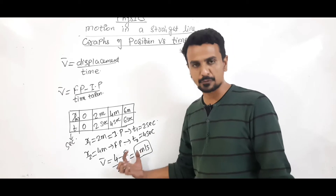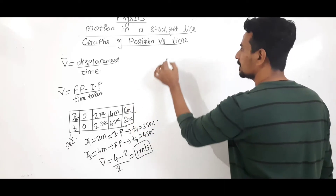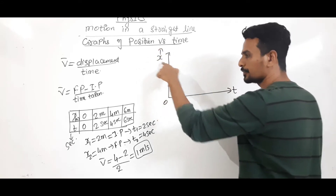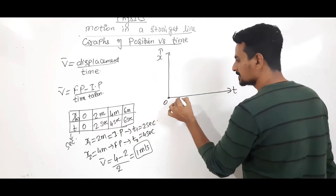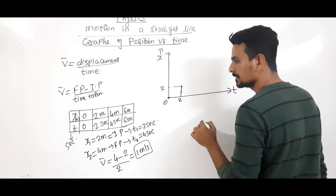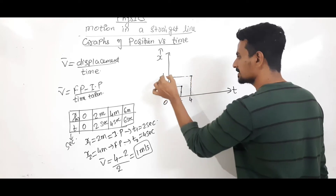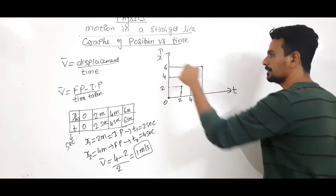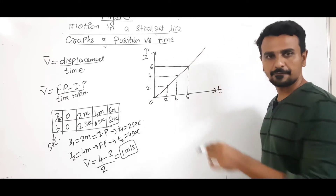How to obtain the same velocity from the graph of position-time? First we will plot the graph. x represents position, t is time. The graph has points: 0 meter at 0 seconds, 2 meters at 2 seconds, 4 meters at 4 seconds, 6 meters at 6 seconds. Join the points — this is how the graph will look like.